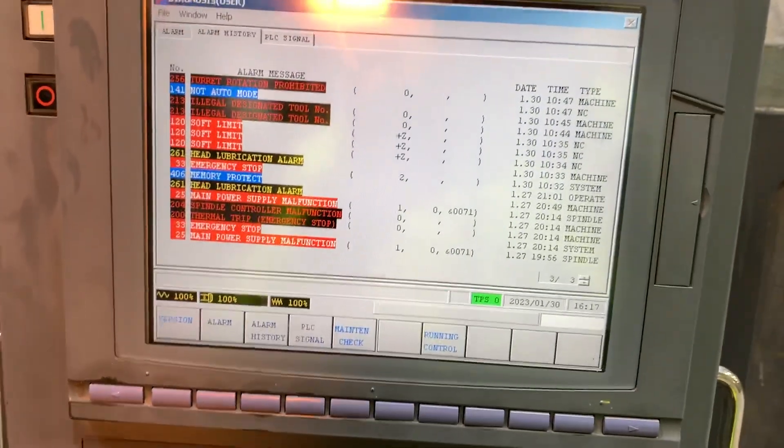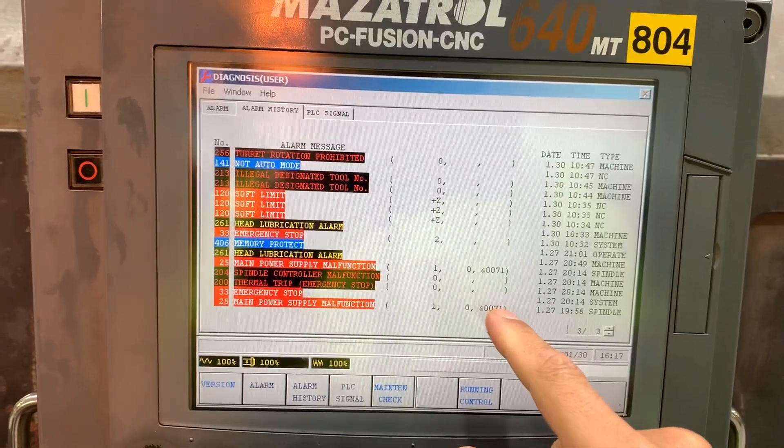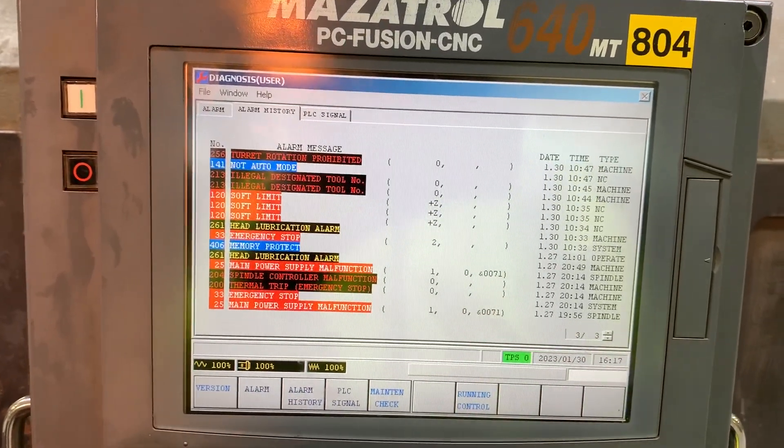This machine has only one spindle, and this code, according to the manual, is telling that you have a problem with the input voltage.